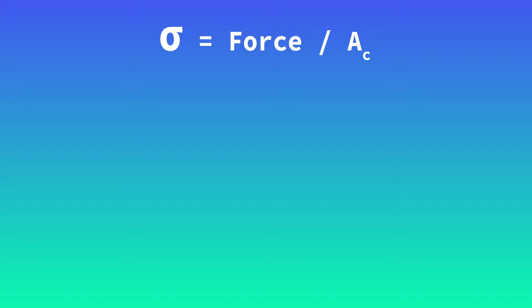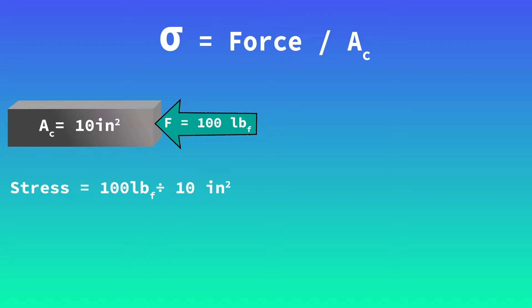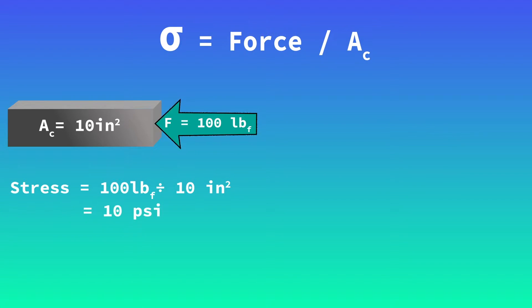To demonstrate, let's take a piece of steel with a cross-sectional area of 10 inches squared and apply a load of 100 pounds. Stress is defined as the ratio of the applied force to the cross-sectional area. Here the experienced compressive stress is 100 pounds per 10 square inches, or 10 psi.